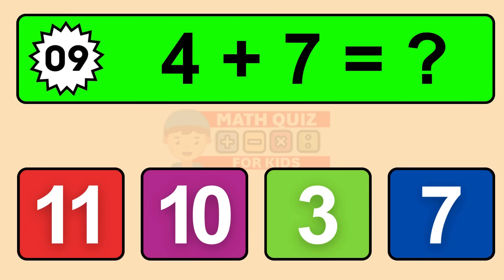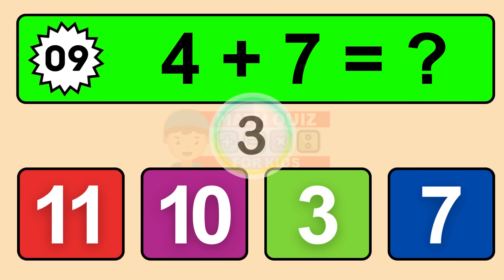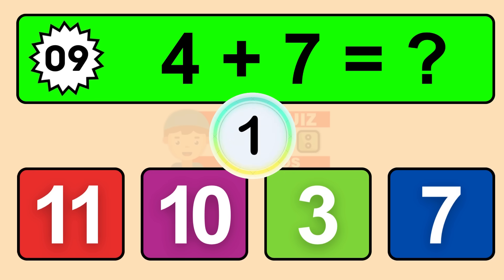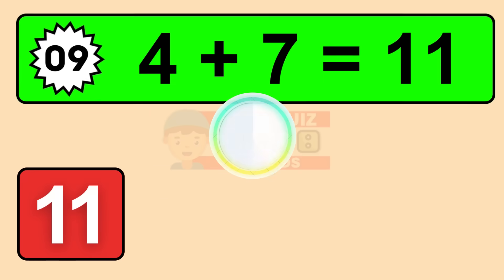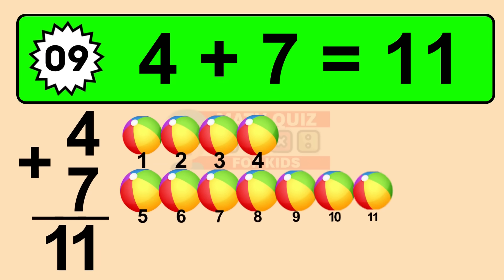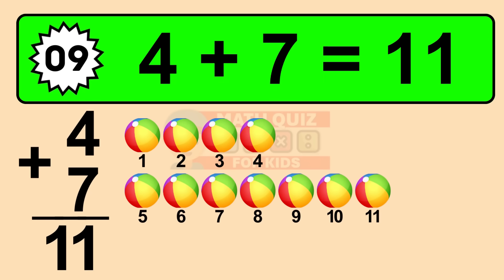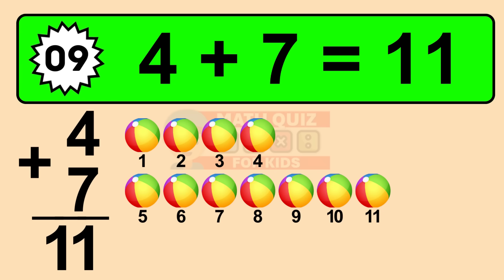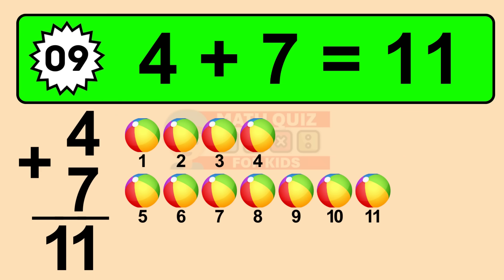Question nine: four plus seven equals what? The answer is four plus seven is eleven. Let's count it. One, two, three, four, five, six, seven, eight, nine, ten, eleven.